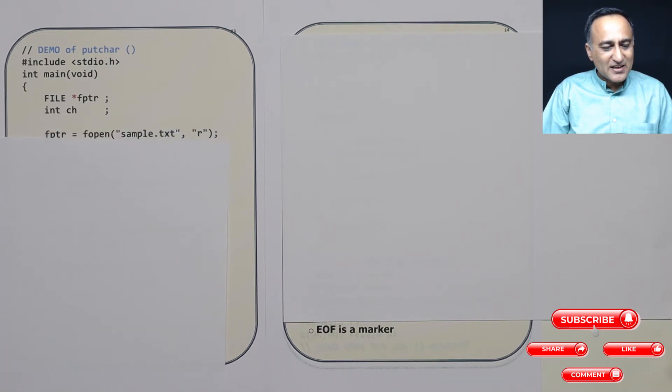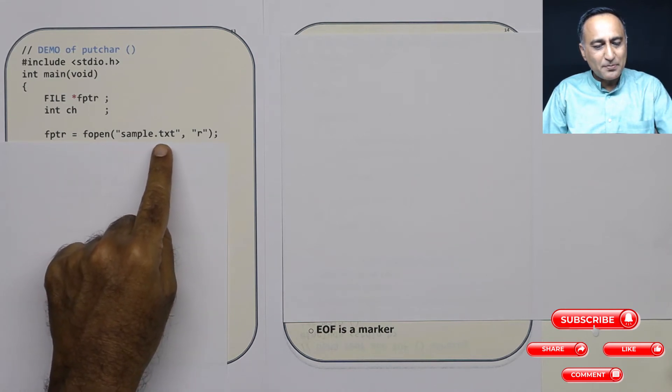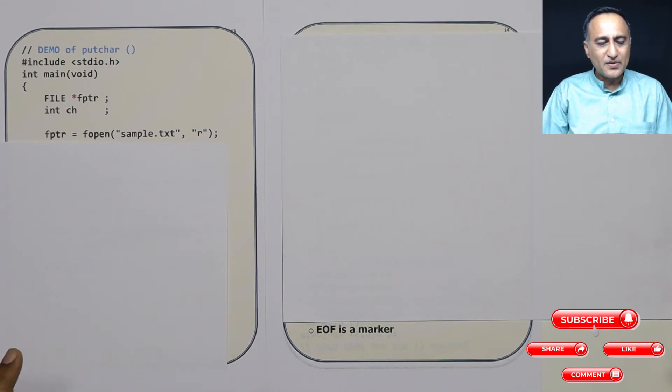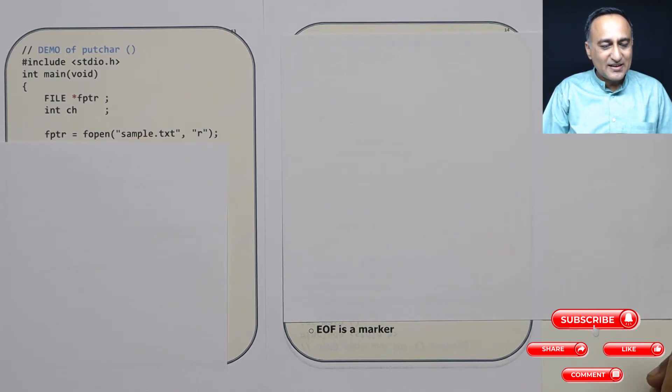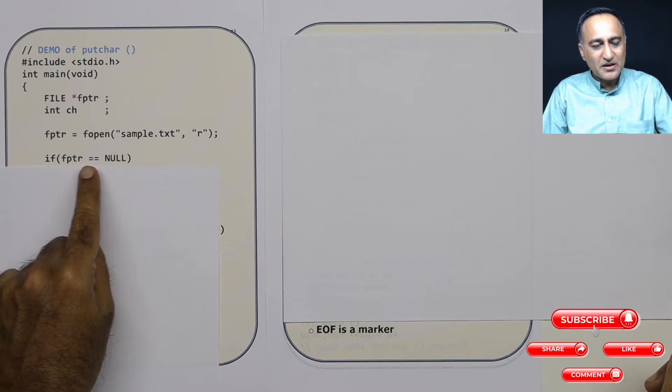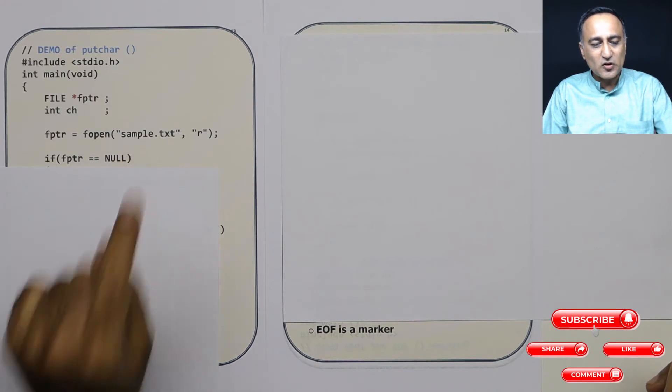We'll know why we have used int ch in a while. But for now, just look at file star fptr. So using file star fptr, I am opening a file called sample dot text in read mode. Here I am assuming that the file has already been created. If this file is not created or it does not exist, then this is what is going to happen. The value of fptr is going to be null because fopen is going to return null as the return value.